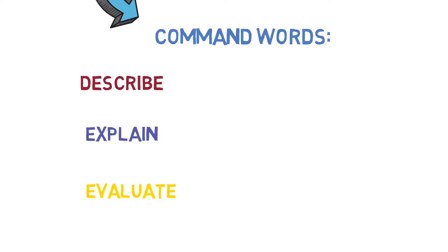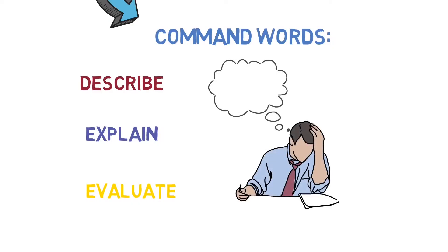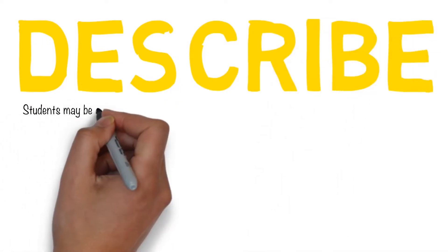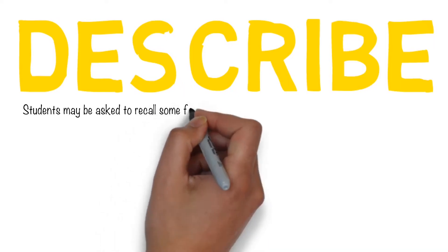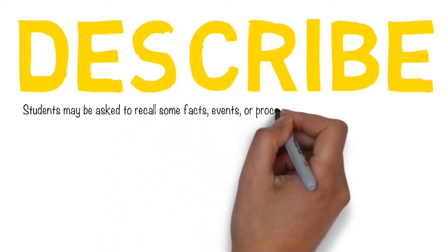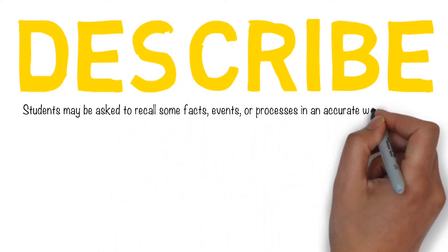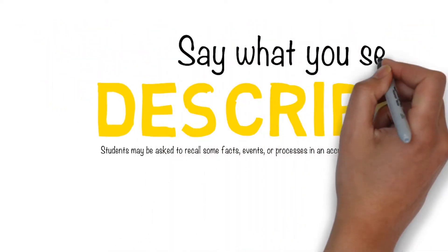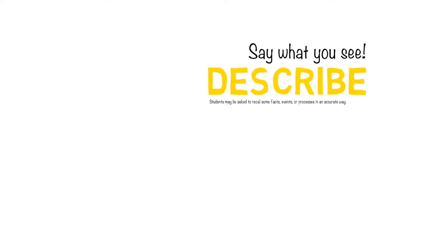But the difficulty that students have is they tend to get these things mixed up, so they answer a describe question with explain and so on. So let's look at these keywords. Let's start off with describe. The way the exam boards explain what a describe question means is they say that students are asked to recall some facts, events, or processes in an accurate way. In other words, you've got to say what you would see, what you would observe.